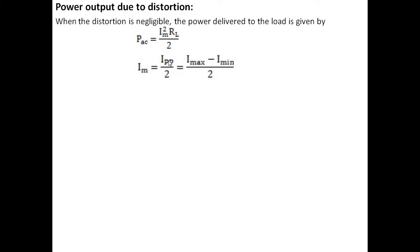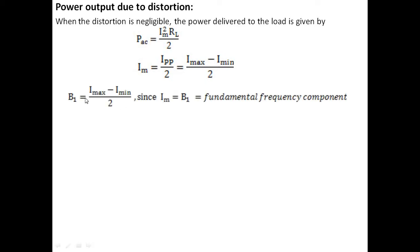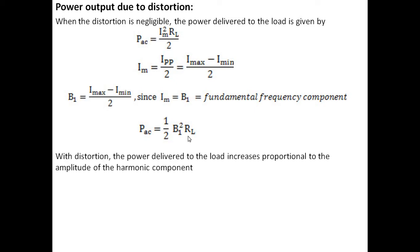The peak current Im is the average of peak-to-peak current: Ipp divided by 2, which equals (Imax minus Imin) divided by 2. B1, the fundamental frequency component, is approximately equal to Im. So we replace Im with B1 and get PAC equal to 1/2 · B1² · RL. This is the basic formula for AC power produced due to the fundamental frequency component.